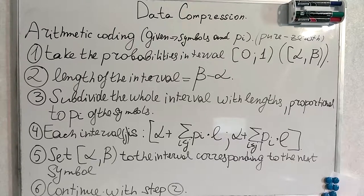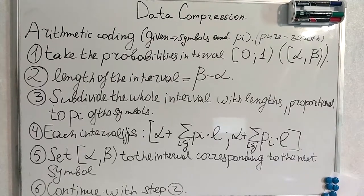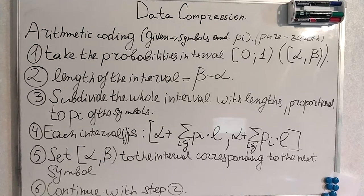So we are given symbols and their probabilities. We take the probabilities into the interval. Our interval starts from 0 to 1. 1 is the whole cumulative probability. So we will subdivide the whole interval with length proportional to probabilities of the symbols. And on each step we will redetermine our interval. And it's determined by this formula.